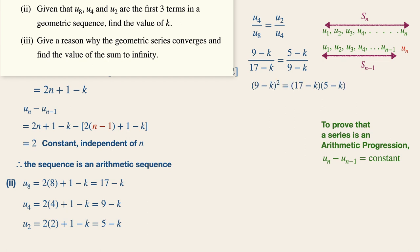Now simplifying, we will then have (9 - k) squared equals to (17 - k)(5 - k), and by simplifying even further to find the value of k, k is equals to 1.